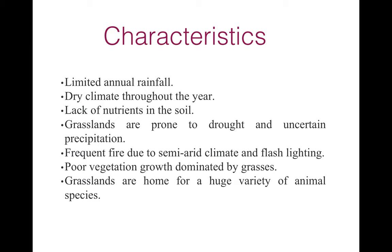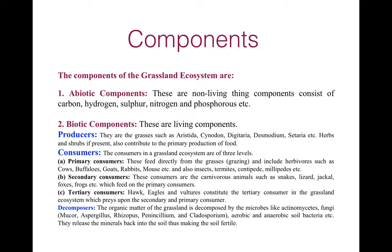These characteristics vary from one grassland to another. The components of the grassland ecosystem are mainly two: abiotic and biotic. Abiotic components are non-living components, mainly consisting of carbon, hydrogen, sulfur, nitrogen, and phosphorus. Biotic components are living components and are of three types: producers, consumers, and decomposers.